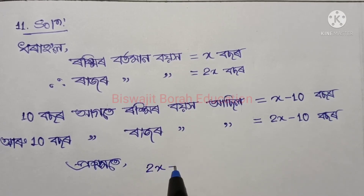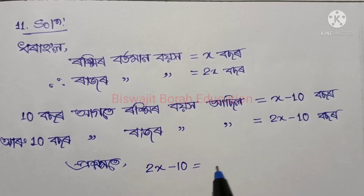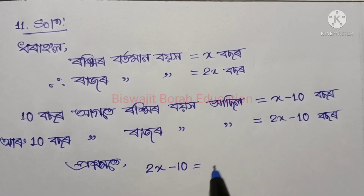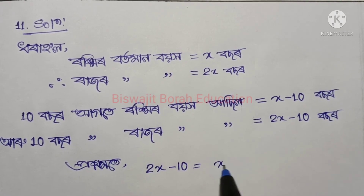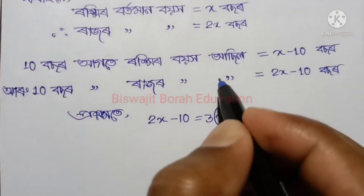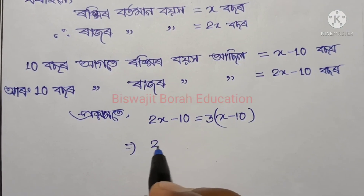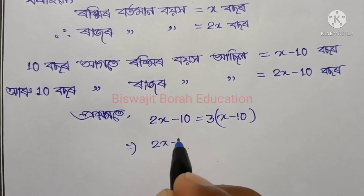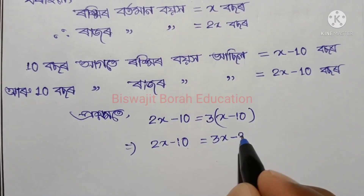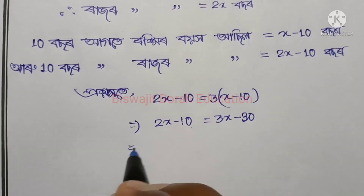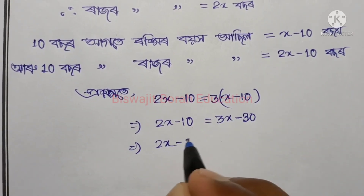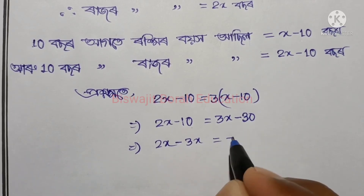2x minus 10, the second term is plus x minus 10. So x minus 10 equals 0, which gives 3x minus 3x plus 3x, equals minus 30.